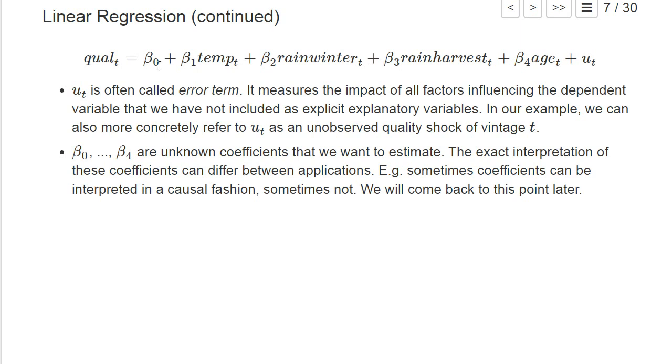And then we have these betas, beta zero, which is a constant, and one coefficient beta for each of the explanatory variables. And these are the unknown coefficients that we want to estimate.